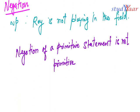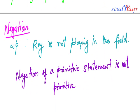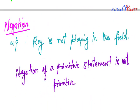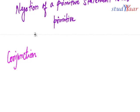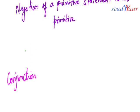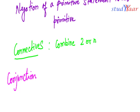So that was about negation. Other ways to create new propositions from a primitive proposition include conjunction. Conjunction is also known as a connective. We have many different types of connectives, and the first one we are going to look at is conjunction. Connectives combine two or more propositions.